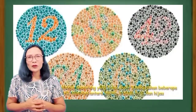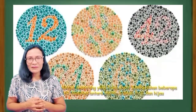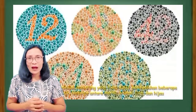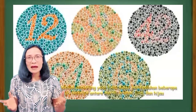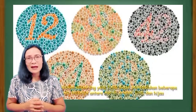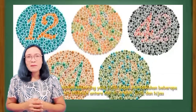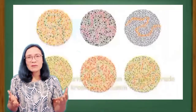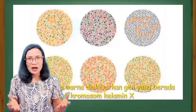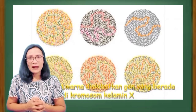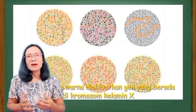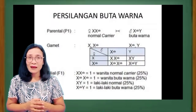Tahukah kamu apa itu buta warna? Buta warna adalah kelainan seseorang yang tidak dapat membedakan beberapa warna dengan baik, biasanya antara merah, oranye, biru, dan hijau. Kelainan buta warna diakibatkan oleh gen yang berada pada kromosom X atau kromosom kelamin.